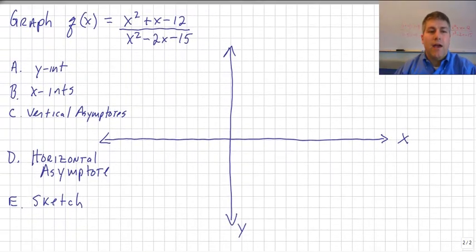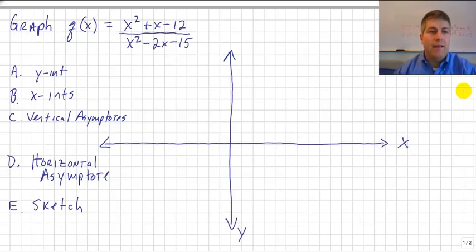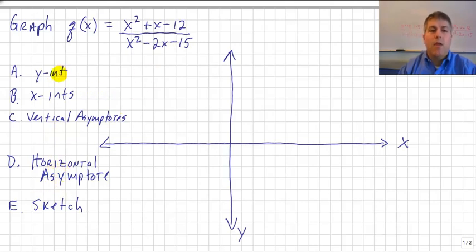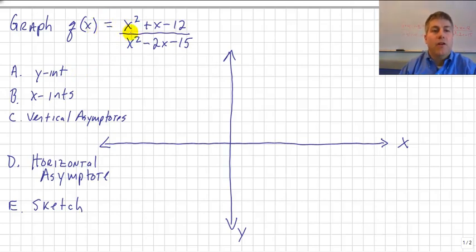Let's take a look at our function. We're going to graph q of x equals x squared plus x minus 12, all divided by x squared minus 2x minus 15, following the outlined process. We'll begin by graphing the y-intercept, then the x-intercepts, vertical asymptotes, horizontal asymptote, and sketch. The y-intercept is our output when our input is 0, so we put 0 in for x and solve for y.